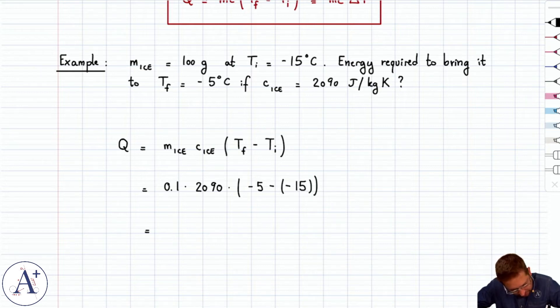And that's going to be equal to, well, actually 2,090 joules, because 0.1 times 10 is 1. So that's the amount of heat that we have to supply.